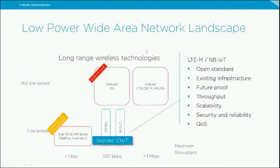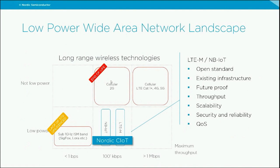A quick refresher on how the low-power wide area network landscape looks. You're all familiar with cellular technology — 5G, 4G, and the traditional standards that have been around for a long time. 2G was used in early machine-to-machine applications but is not very low power, and it's now being turned off in many parts of the world as 5G rolls out and operators shift their business focus.